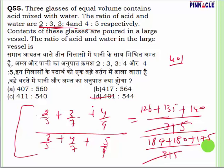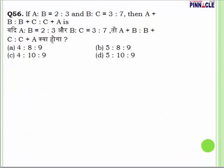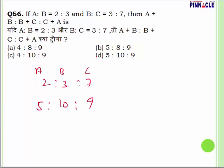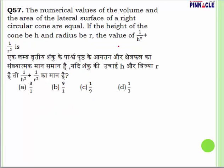Question number 56: The ratio is 5 to 7. Working through the values gives answer D. This is a very easy question.